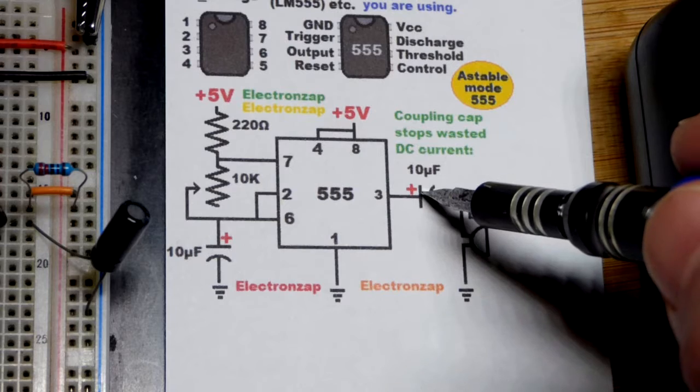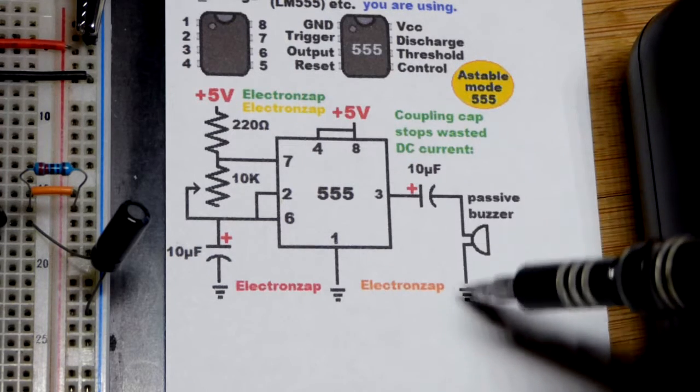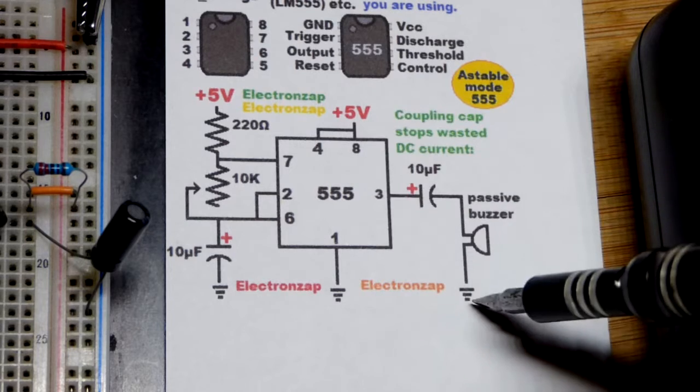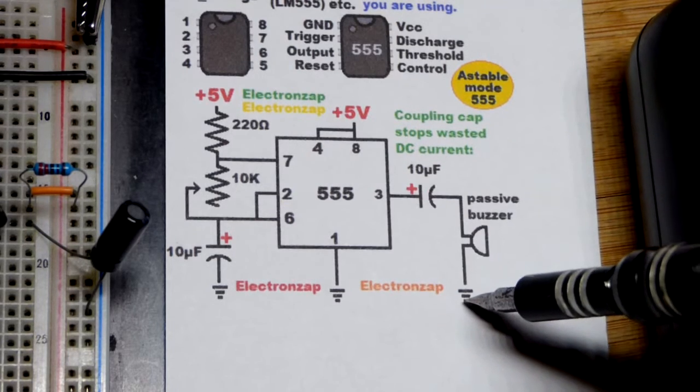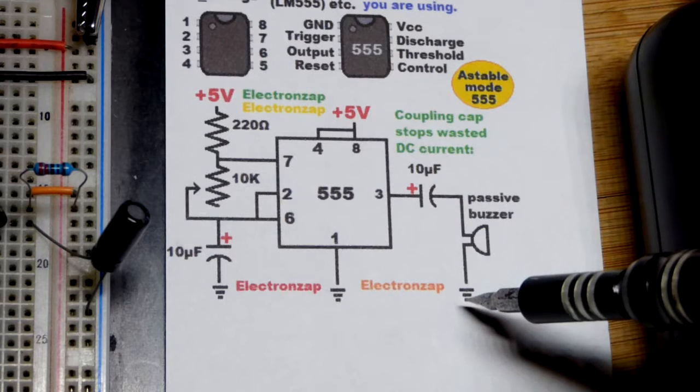When I didn't have the capacitor though, I had my power supply set to a maximum of 150 milliamps of current and I was seeing that for brief periods when I slowed down the clicks. So a lot more current was flowing.